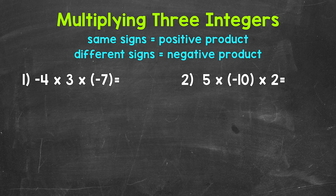When we are multiplying three or more integers, we can multiply two at a time in order to break the problem down and get to our product. Remember, product just means the answer to a multiplication problem. We're going to go left to right here, so let's start with negative four times three.